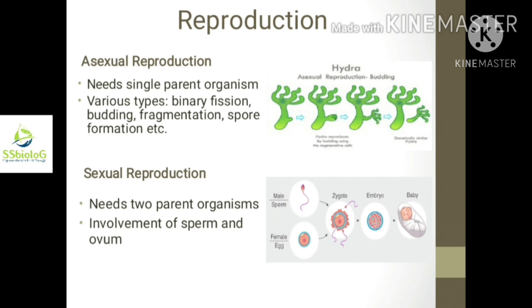In the case of sexual reproduction, two parent organisms produce sperm and egg cells, each containing half of their genetic information. Those cells fuse to form a new cell which generates a new individual with a full genetic set. So these are the whole processes of reproduction.